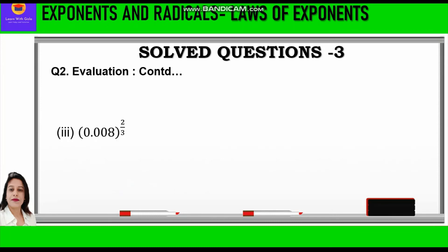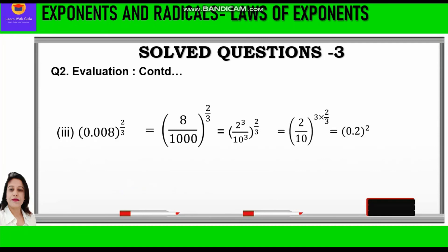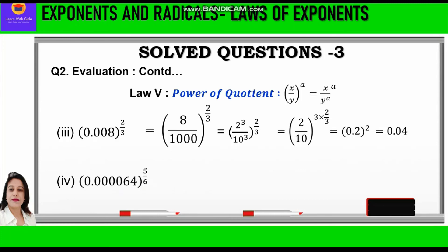Question 2 part 3: 0.008 raised to power 2 by 3. We write 8 upon 1000 raised to power 2 by 3. Now 8 is 2 cube and 1000 is 10 cube, so we write 2 cube upon 10 cube raised to power 2 by 3. Applying power of quotient, we write 2 upon 10 whole raised to power 3 into 2 by 3. The 3s cancel and 2 by 10 is 0.2, so we get 0.2 square, which is equal to 0.04.